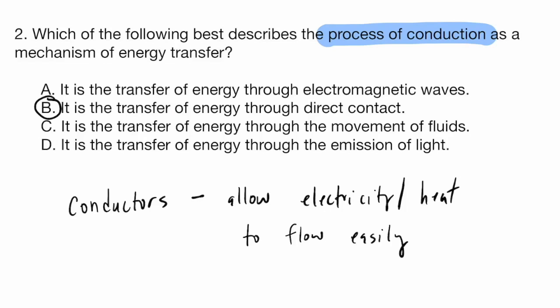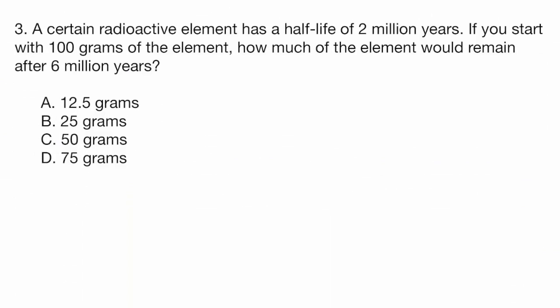Problem three: A certain radioactive element has a half-life of 2 million years. If you start with 100 grams of the element, how much of the element would remain after 6 million years? All right, note you will not be able to use a calculator on this exam. But we don't really need to, the math here is going to be simple enough where we don't even need a calculator. First of all, we need to remember, what is a half-life?